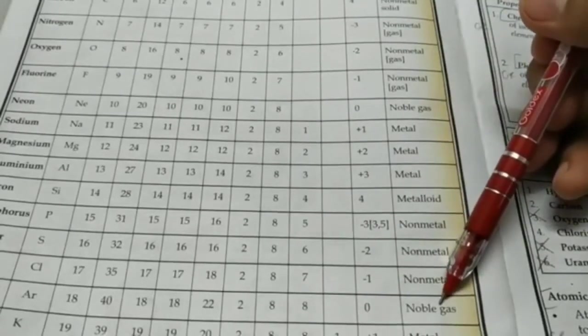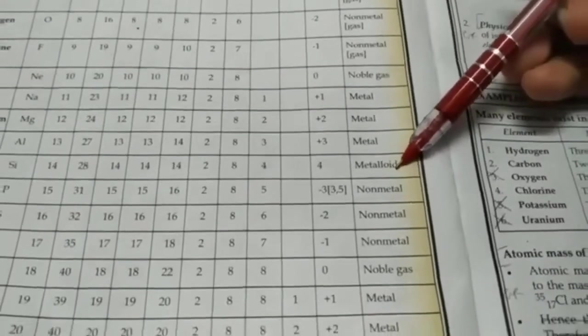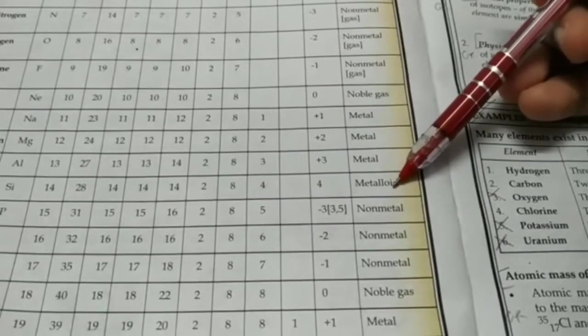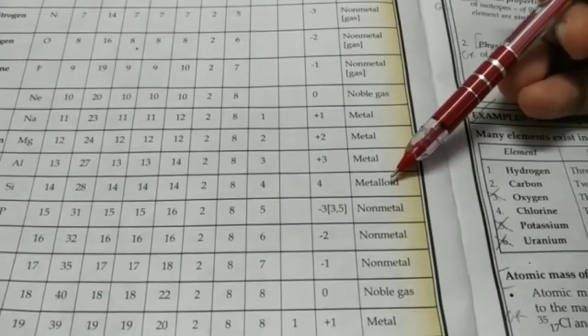There are a few exceptions though. For example, boron is a metalloid and so is silicon. So remember these two exceptions because they have properties of both metals and non-metals. It's a transition between metallic and non-metallic properties, so we call it metalloid.